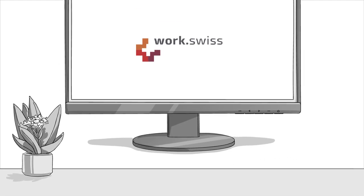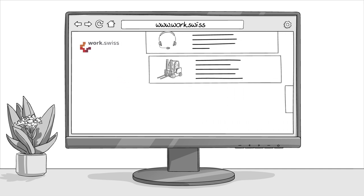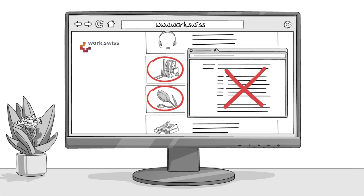Ms. Schmid consults www.work.swiss, or her nearest RAV, to see if the occupations of warehouse worker and kitchen assistant are among the occupation types that have to be registered. As both occupation types have an unemployment rate above 8%, Ms. Schmid has to register the vacancies with the RAV. She is not yet allowed to advertise the vacancies publicly.